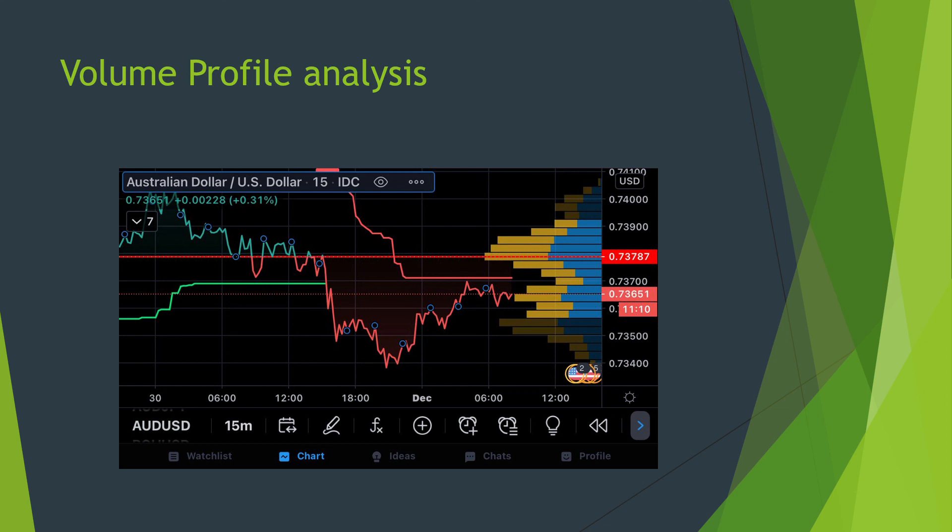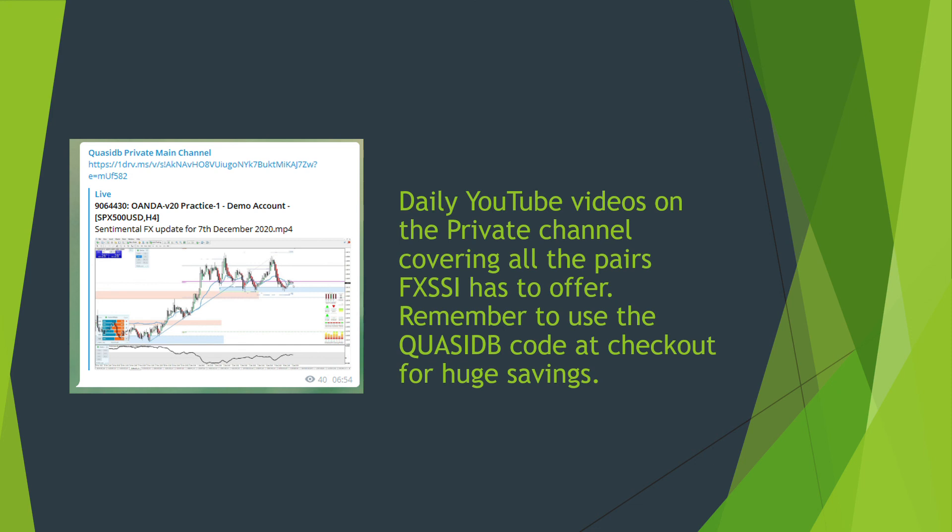Lastly, you get YouTube videos on the private channel covering all the pairs that FX SSI has to offer. If you want the FX SSI MetaTrader 4 indicators, use the QuesiDB code at checkout for a huge saving — I think it's around a 70% discount. If you want stop-loss clusters, you can just subscribe to the premium package and get them that way, though they're only updated once a day on the spreadsheet. So you get a lot of stuff — the price on offer is incredibly competitive compared to what others are charging.